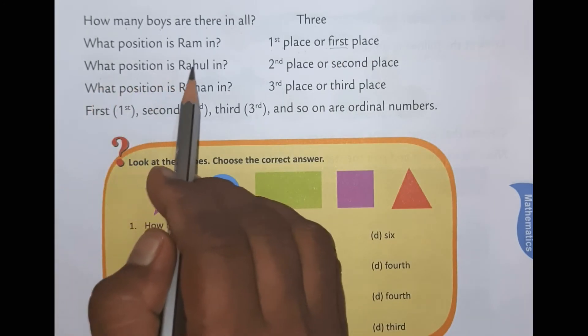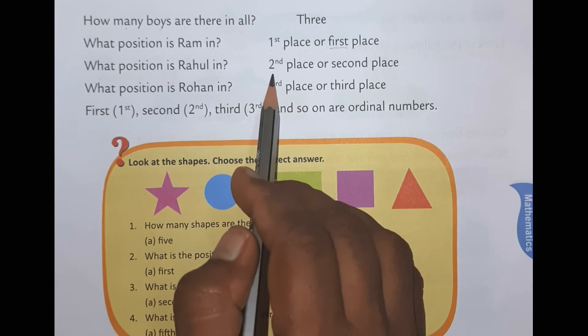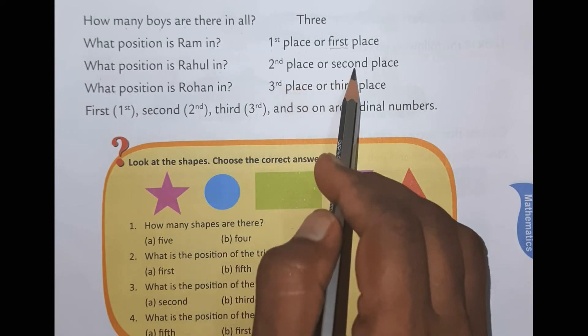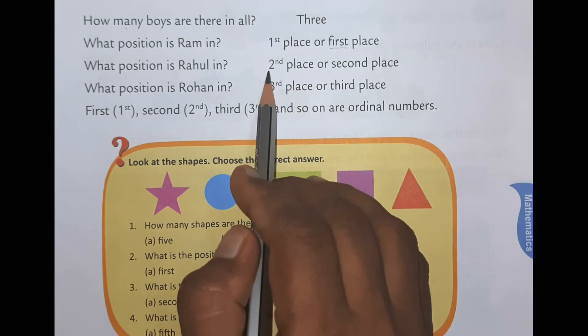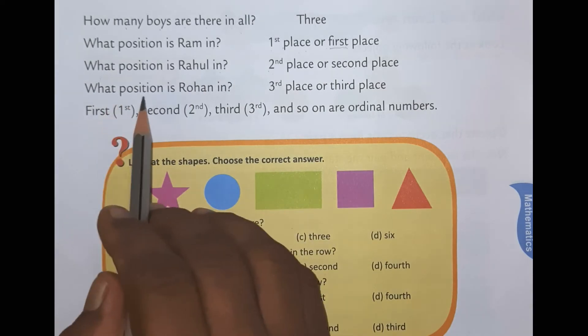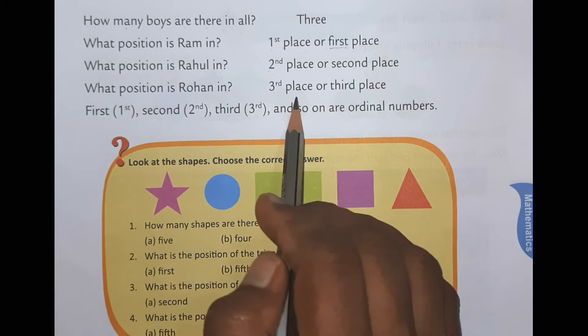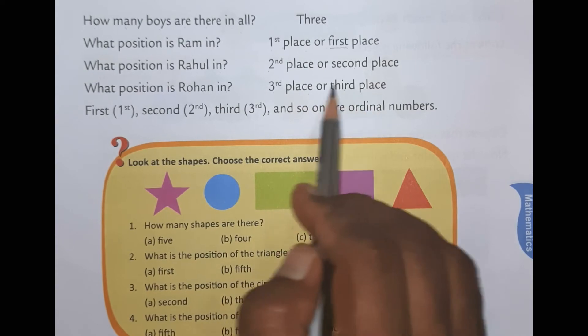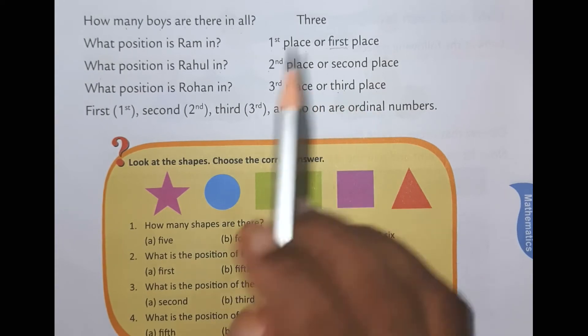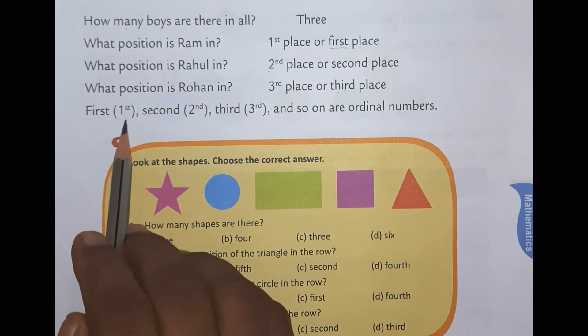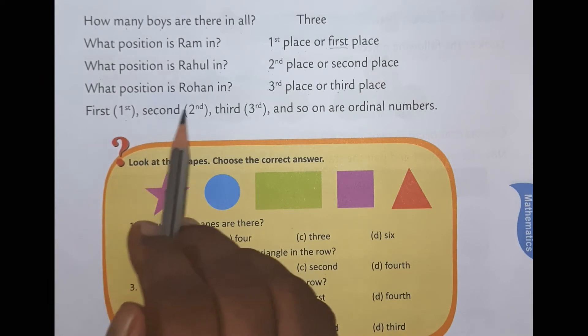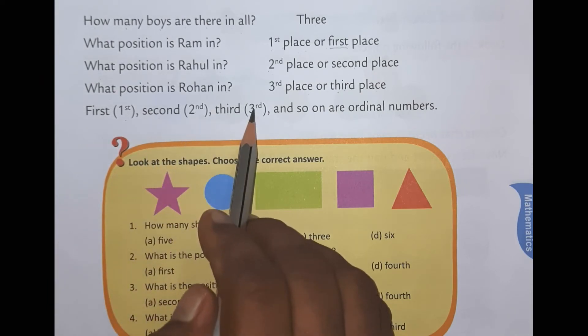What position is Rahul in? Second place or second we can write as spelling also or we can write like this also. What position is Rohan in? Third or third place. Spelling should be like this. First 1st. Second 2nd. Third 3rd.